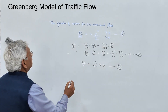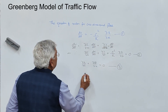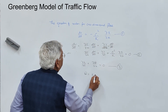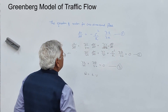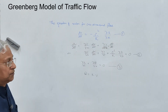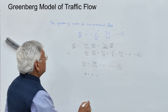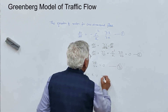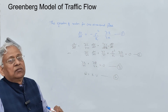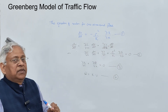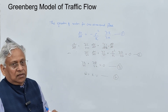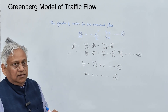You also know that q equals k times v — that is the fundamental correlation between speed, density and flow. If you assume that speed depends only on concentration, that is density, and solve these equations, you get the Greenberg model.